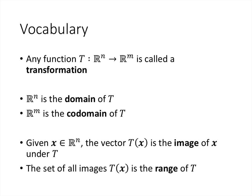Now let's establish some vocabulary. Any function that goes from Rn to Rm — where inputs are vectors with n entries and outputs are vectors with m entries — is called a transformation. Rn, the set of inputs, is the domain of the function. Rm, the set of potential outputs, is called the codomain. Given an element in the domain, the vector we get when we plug it into the function is called the image of x. And the set of all actual images we get is called the range of T.